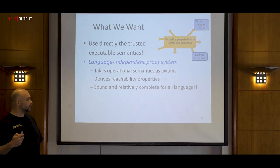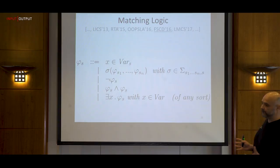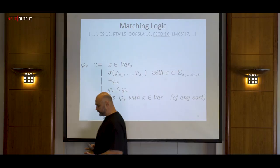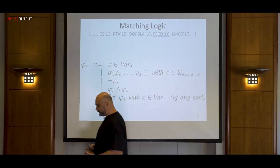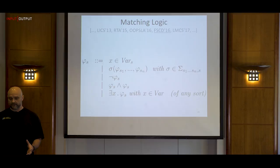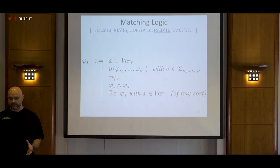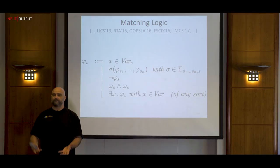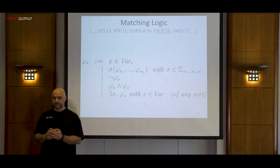It took us many years to come up with a logic that, looking at it retrospectively, looks ridiculously simple. It is almost unbelievable that it can explain everything going on under the hood in the K framework. In other words, everything that any of the tools in the K framework does can be seen as proof search in this logic. The logic is very simple — it captures the essence of what you need to specify programming languages and properties about programs in them.